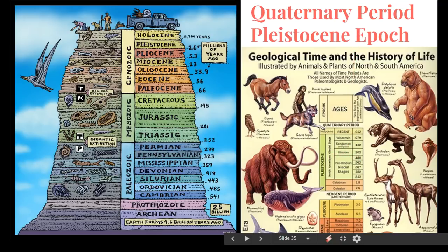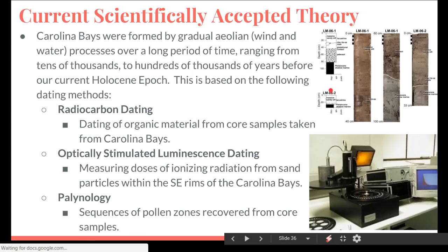And it's really the rise of the big mammals. As we discussed in part one, the current scientifically accepted theory for the formation of Carolina Bays has been wind and water erosion over a long period of time — hundreds of thousands of years. This gradualistic idea is mainly based on a series of dating methods for the bays themselves, like radiocarbon dating, optically stimulated luminescence dating — which is dating the light exposure on rocks and minerals — and even the dating of pollen grain layers from within the bays.